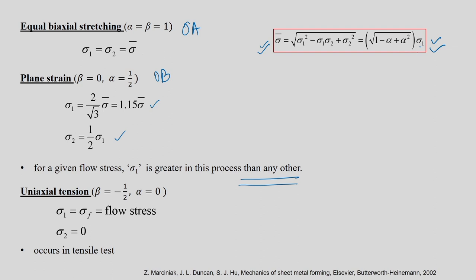In uniaxial tension OC, where alpha equals 0, sigma_bar equals sigma_1, which is nothing but sigma_f, the flow stress. Sigma_2 is 0. Both sigma_bar, sigma_1, and sigma_f are all equal here. But in path OB, sigma_1 is 1.15 times sigma_bar, and this occurs in the tensile test.